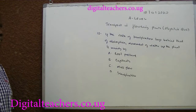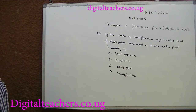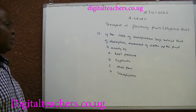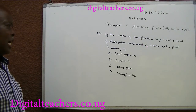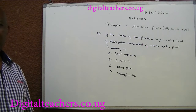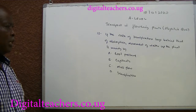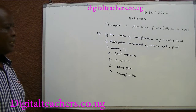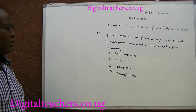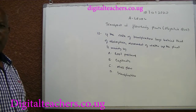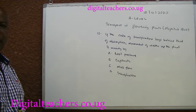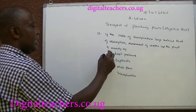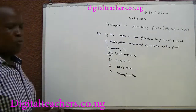Number 13. If the rate of transpiration lags behind that of absorption, movement of water up the plant is mainly by A. Root pressure. B. Capillary. C. Mass flow. D. Transpiration. You can pause and answer. The answer is A. Root pressure.